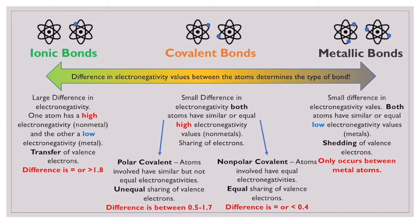There are two types of covalent bonds. There are polar covalent bonds where atoms both have high electronegativities, but one has a much higher electronegativity and is kind of hogging the electrons, so there's an unequal sharing of those valence electrons. If we look at the electronegativity values, the difference in electronegativities between the two atoms involved is going to be between 0.5 and 1.7 for a polar covalent bond — the atoms are sharing electrons, there's no transfer.